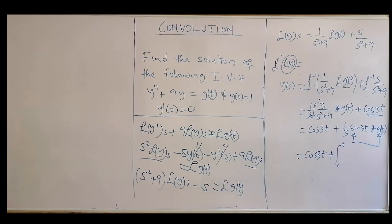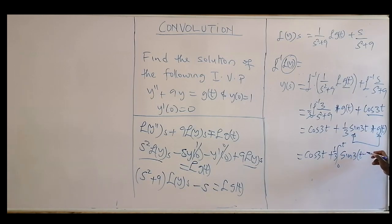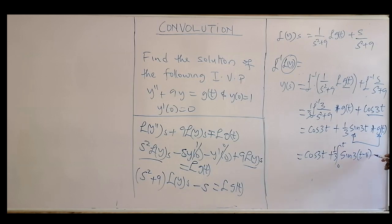The 1/3 can be taken outside the integral. Using the convolution formula, wherever we see t we substitute t minus v, so we get cos(3t) plus (1/3) times the integral from 0 to t of sin(3(t - v)) times g(v) dv. That is the complete solution using the convolution theorem.